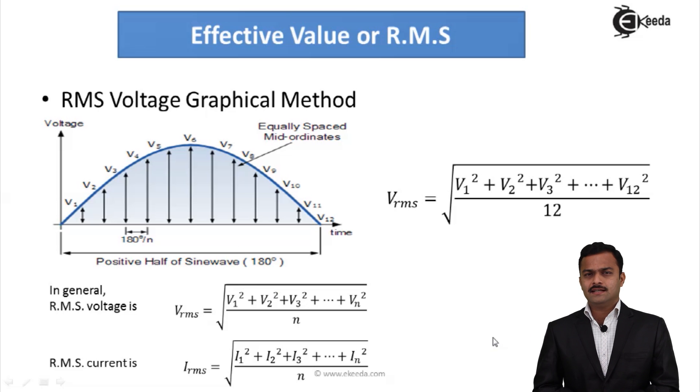So same effect can be true for a full cycle. In half cycle, I have considered 12 instances. These 12 instances are giving you 12 instantaneous values of voltages V1, V2, V3 like that. So as per the definition, it is root of mean of square of instantaneous values. That will give you V_RMS equal to root of V1² + V2² + V3² like that till V12² divided by 12 because I have considered 12 values.